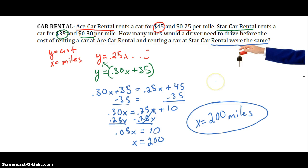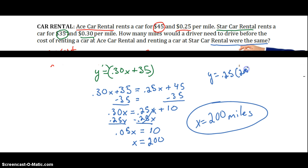One thing I forgot to mention, though, is if we want to check our answer, all we have to do is substitute 200 in for both equations to see if they are equal. So we can do y, plug it into our first equation, we get y equals 0.25 times 200 plus 45. If we multiply all of that out, we end up getting $95. Then we can do the same thing for Star Car. We will do y equals 0.30 times 200 plus 35. When we multiply all of that out, we get $95 as well.